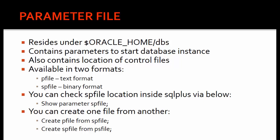Next we have the parameter file. This is a very important file in order to start the database, and as we have already seen, the parameter files reside under the Oracle Home DBS location. The parameter file contains the parameters to start the database instance — for example, how much memory is to be allocated and how much RAM has to be used for the Oracle database.